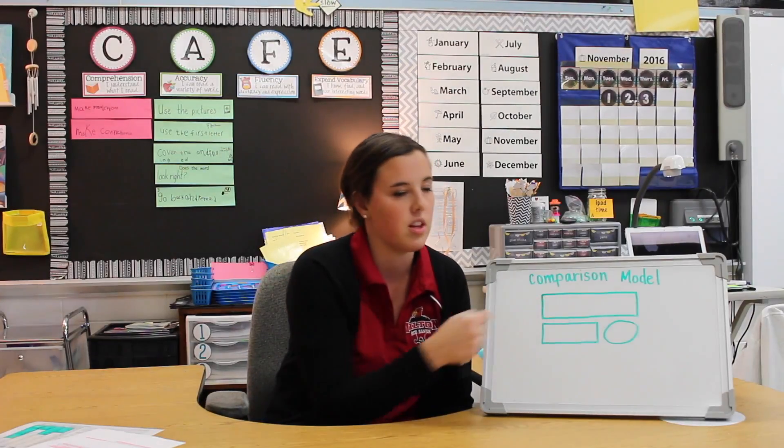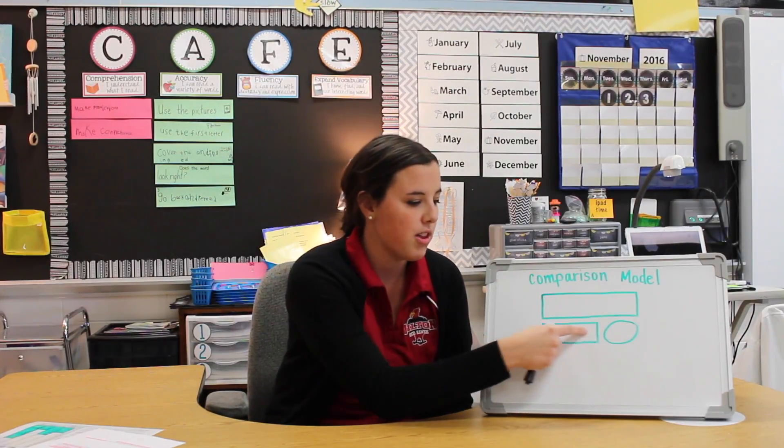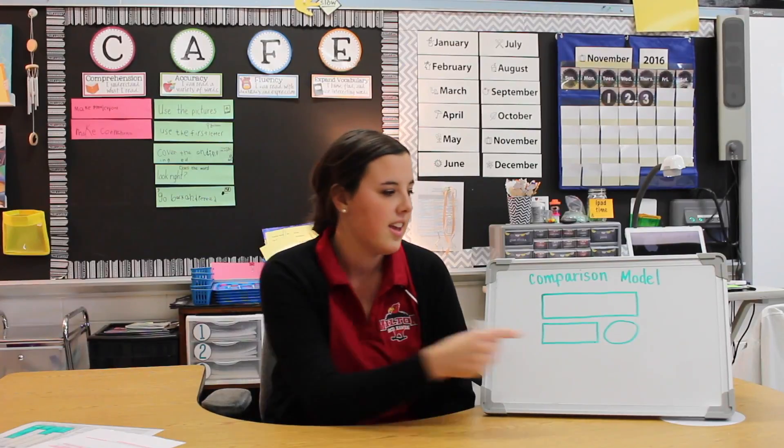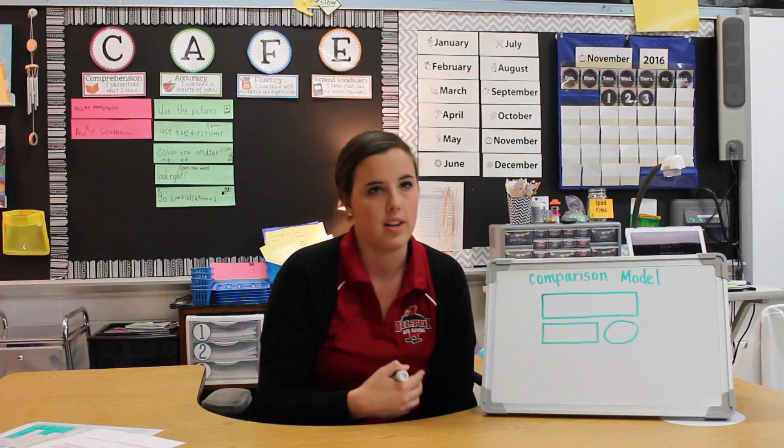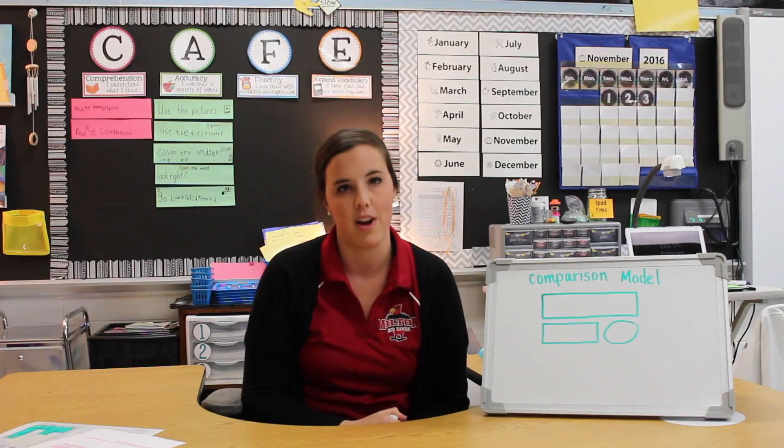The top bar represents the larger quantity, the smaller bar represents a smaller quantity, and the oval represents the difference quantity or the difference between the two larger and smaller quantities.